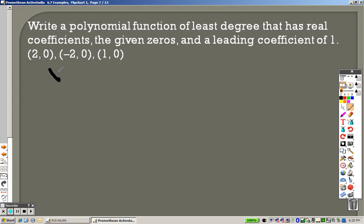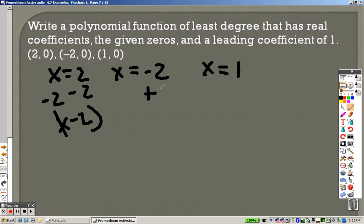That's like saying x equals 2, x equals negative 2, x equals 1. So just like the last problems, I subtract 2 to get x minus 2 as an answer. I add 2 to both sides, so I end up getting x plus 2 as an answer.